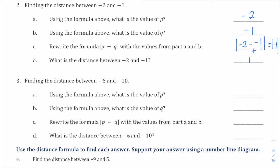Let's find the distance between negative six and negative ten. So again, p is negative six, q this time is negative ten. So this would be the absolute value of negative six minus negative ten. So that's negative six plus ten is four, and the absolute value of four is four.